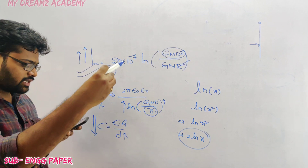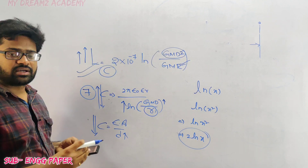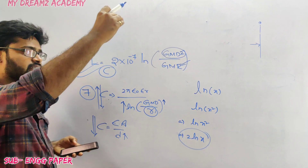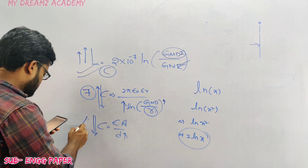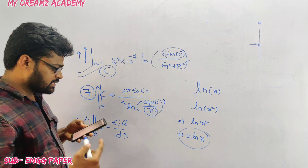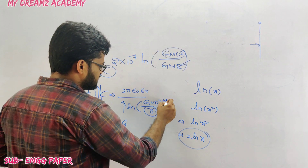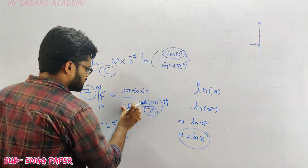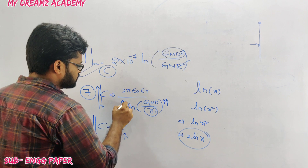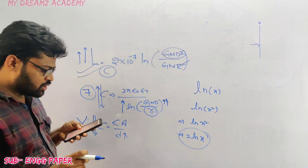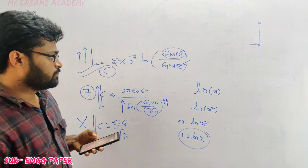Increase in height of the conductor above the ground means the distance increases, so capacitance decreases — second option is wrong. Increase in mutual geometrical mean distance also causes capacitance to decrease. So neither option A nor option B leads to increased capacitance; both are false.